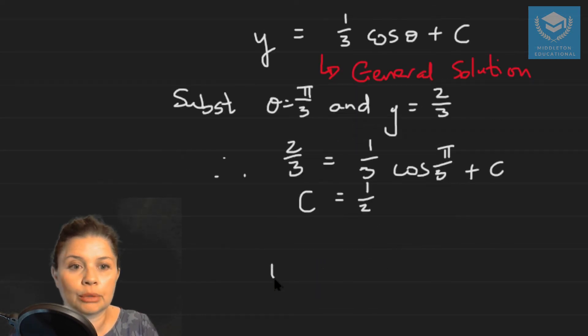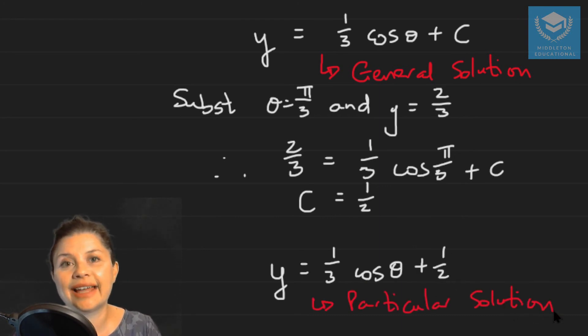And our particular solution is going to be a third cos theta plus a half. As easy as that.